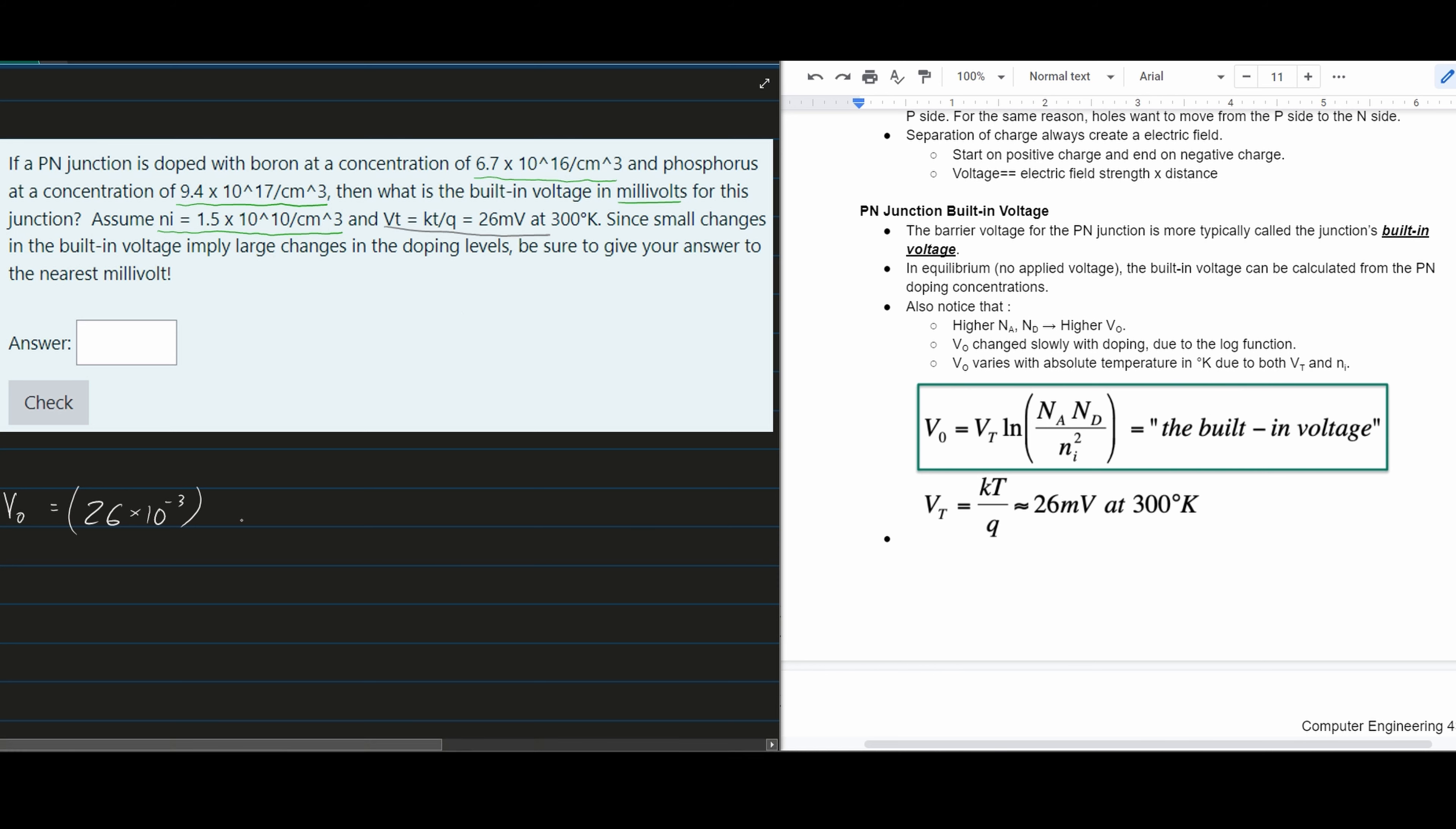Next, we have the natural log term. Inside, we have Na and Nd in the numerator and Ni squared in the denominator.